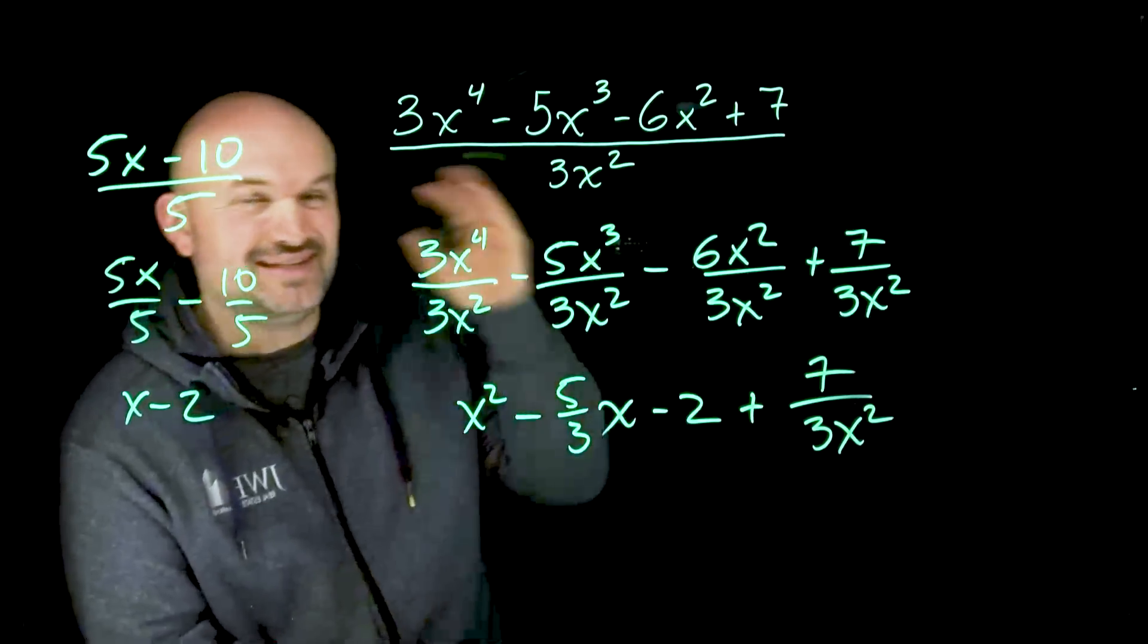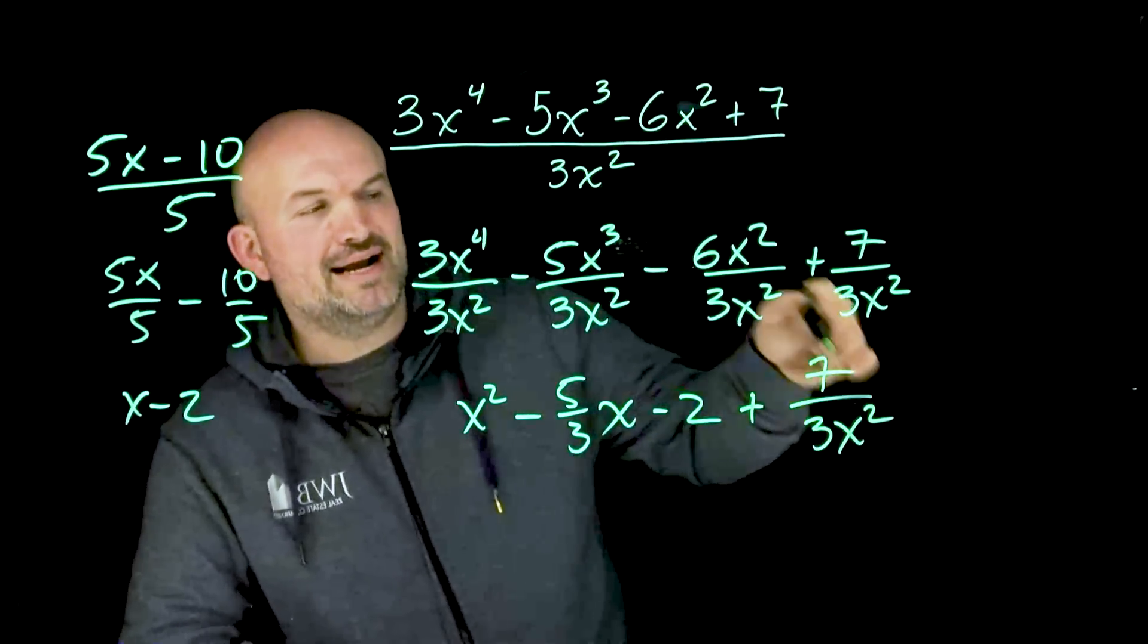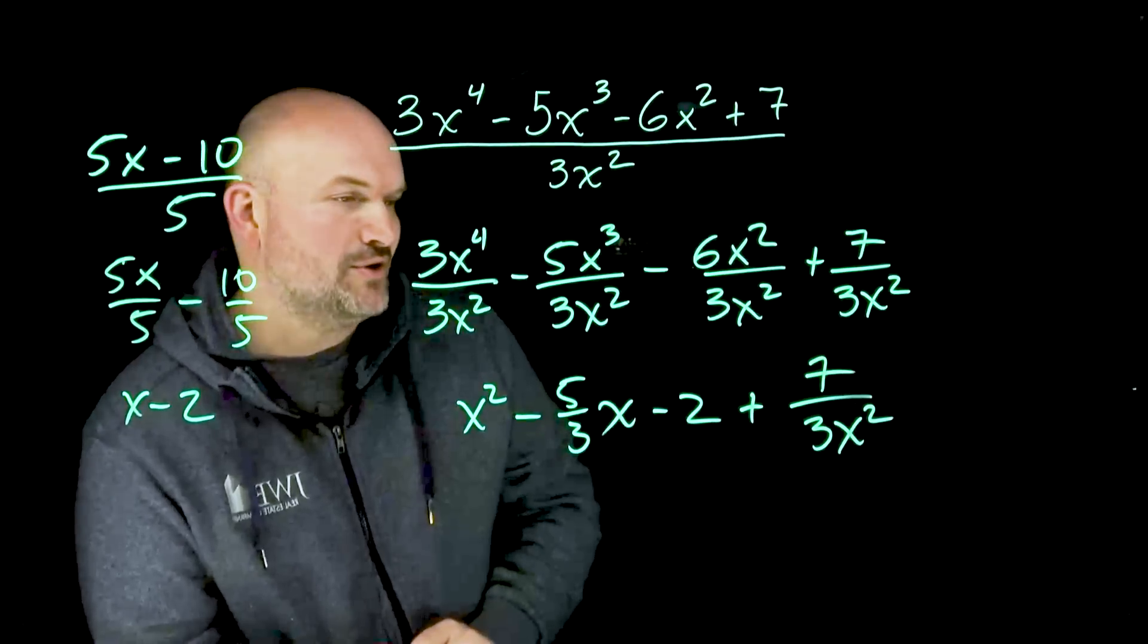And since 3x squared does not evenly divide into 7, I'm going to leave that as a remainder, but I'll write it as my constant over that divisor to give me my final term.